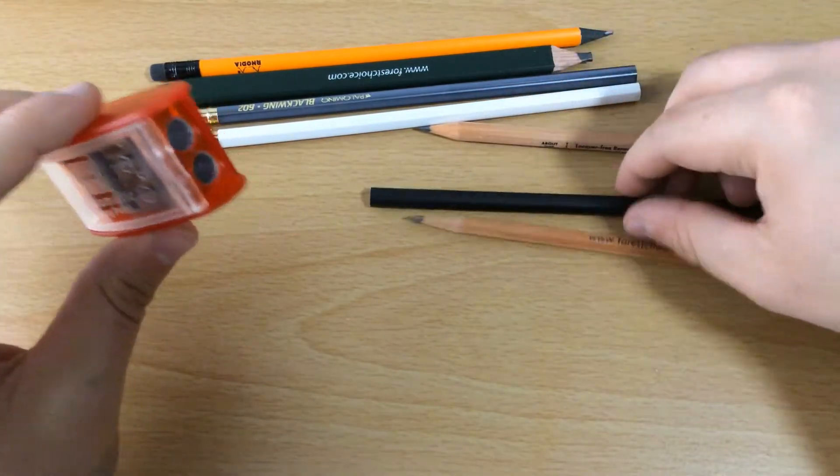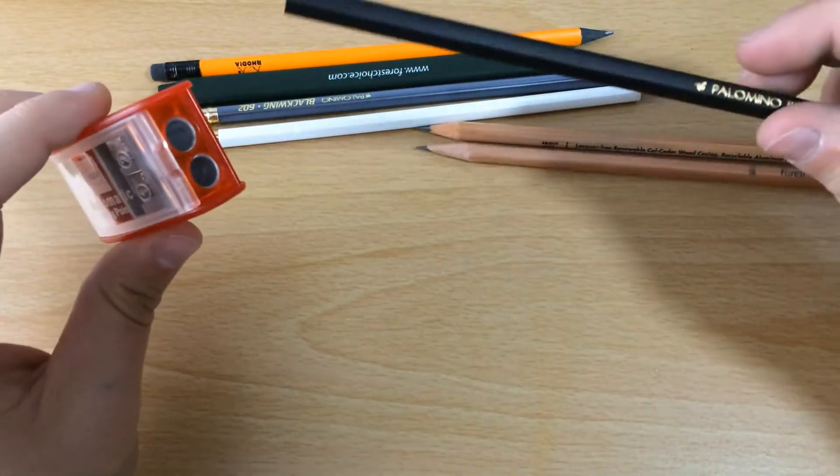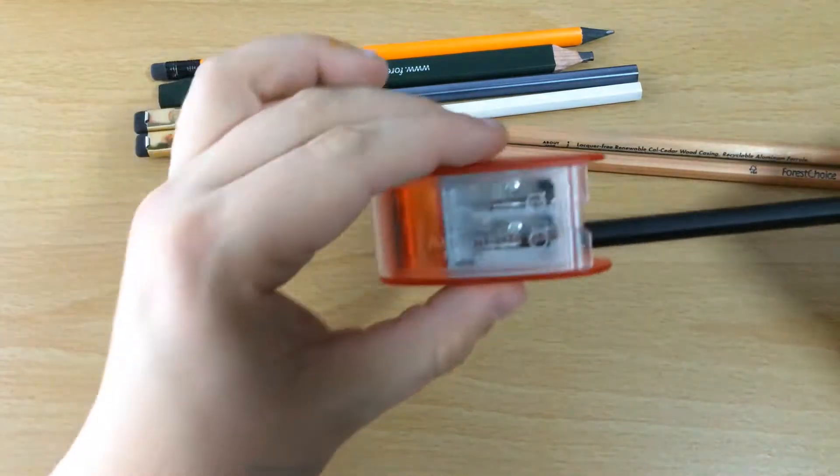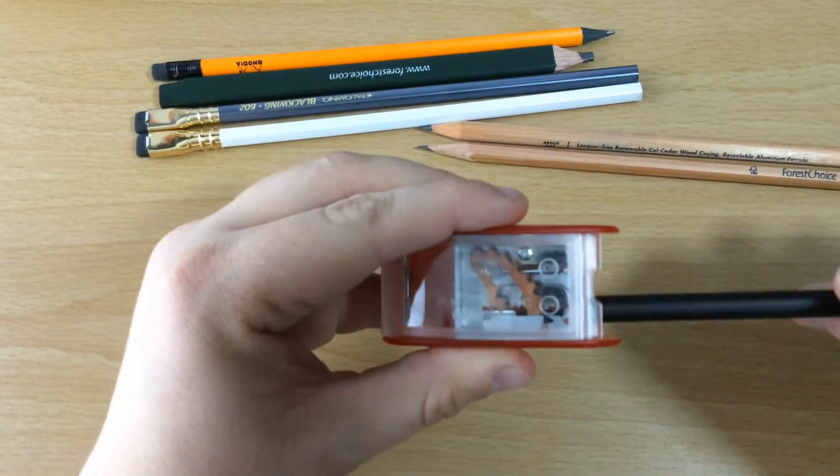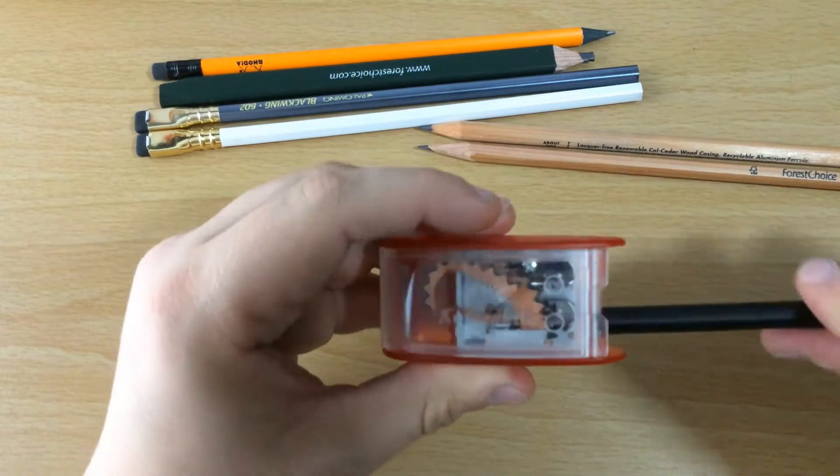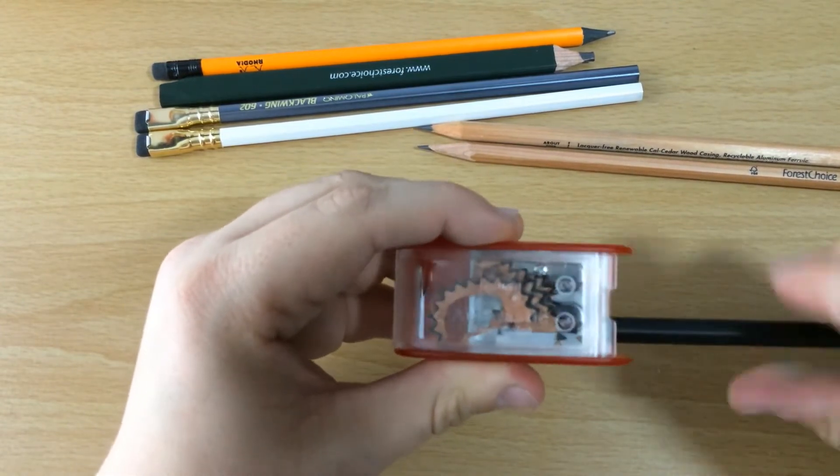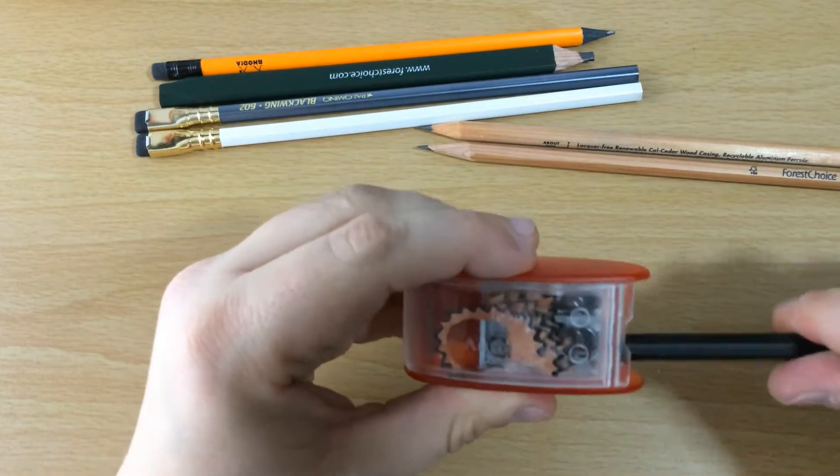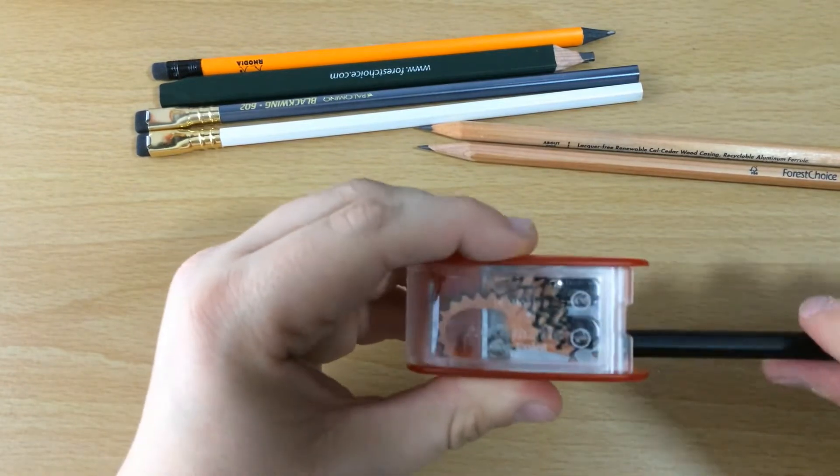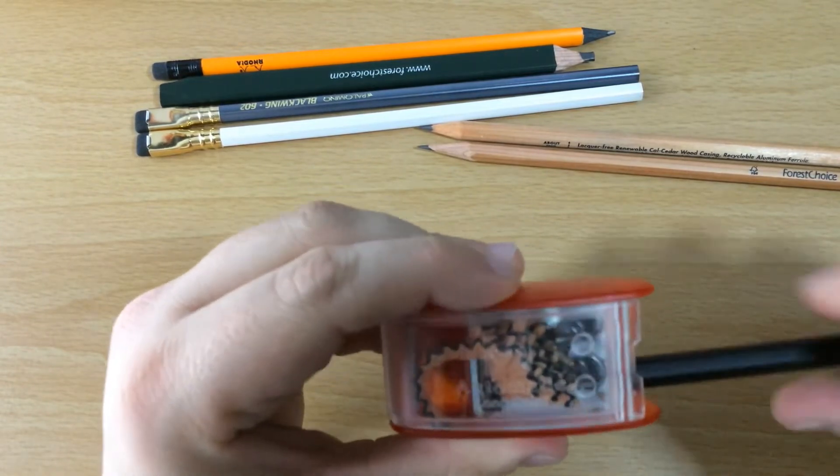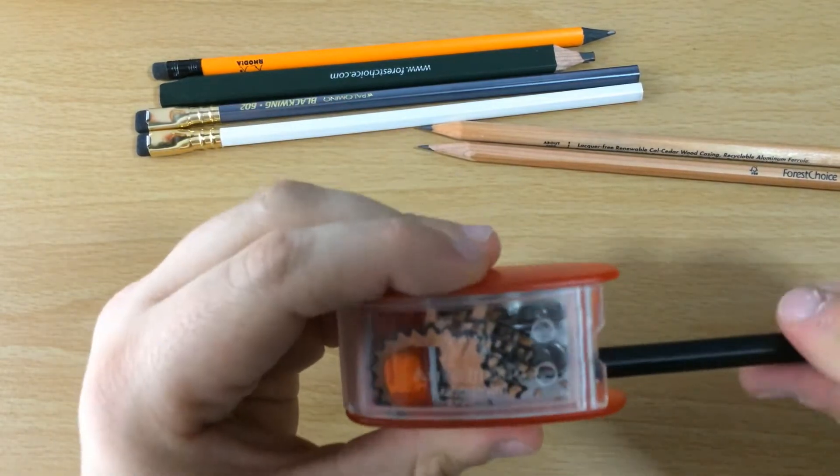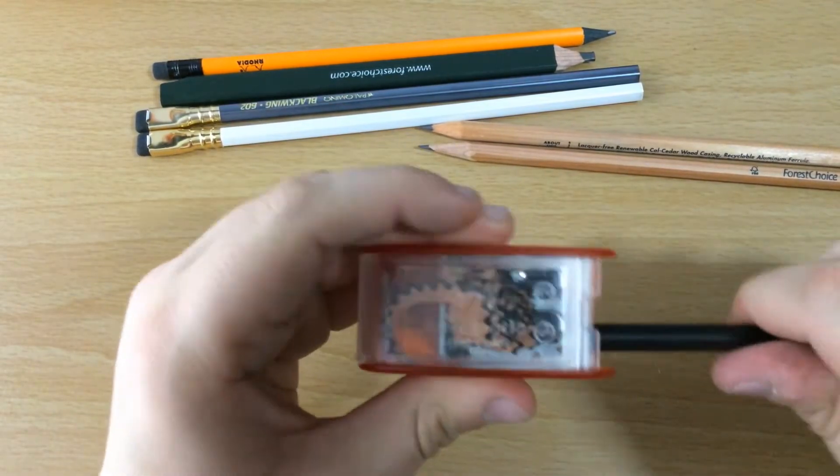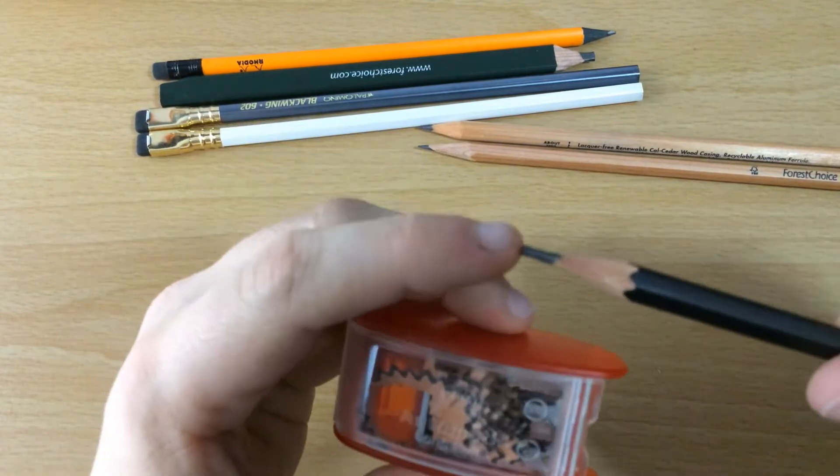So to start with, you just take it, I'll just grab the regular Palomino Blackwing here, and you'll put it in. And then just as you'd expect with any pencil sharpener, you'll just keep going until the point is ready. Take it out, check it up, not done yet. There you go.